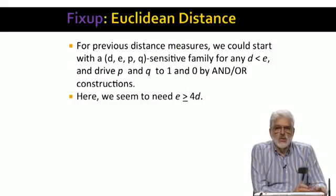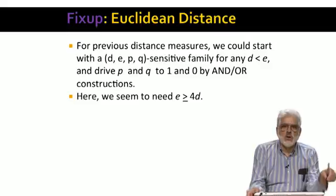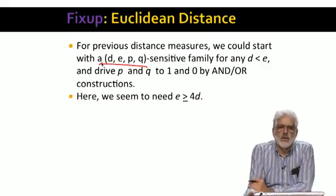However, there is something unsatisfying about that analysis. For minhashing or random hyperplanes, we were able to start with a d, e, p, q sensitive family for any d and e, as long as d was less than e. And we could then drive p to 1 and q to 0 using the and and or constructions. Here we don't seem to be able to get d and e to be as close as we want. We seem to need d to be at least 4 times e.